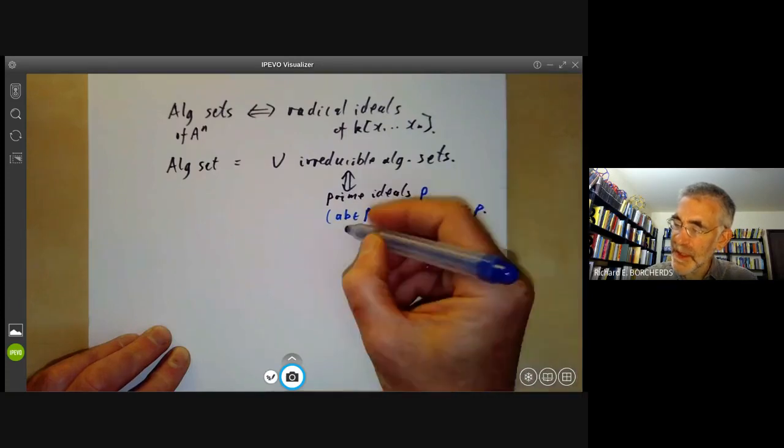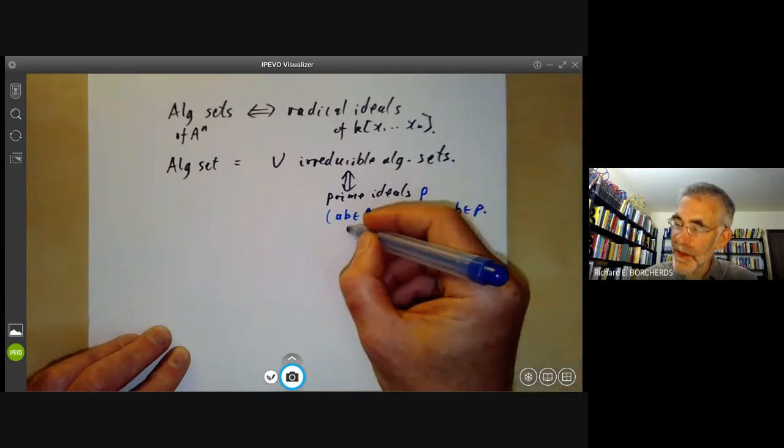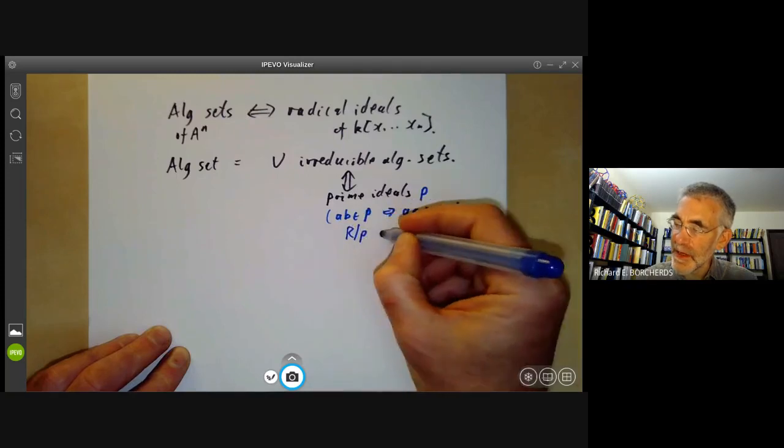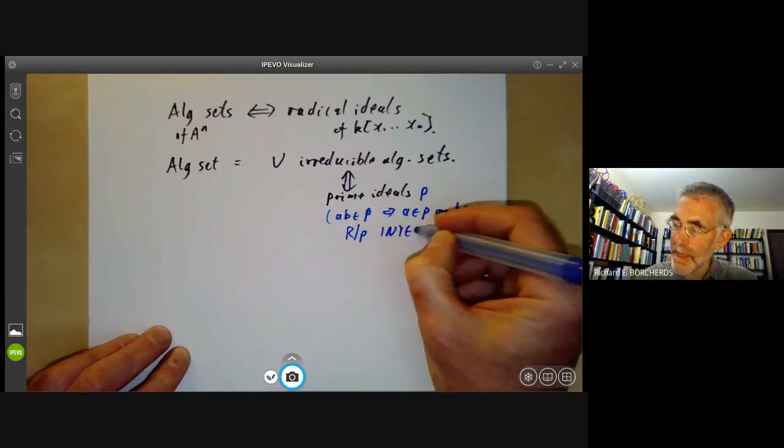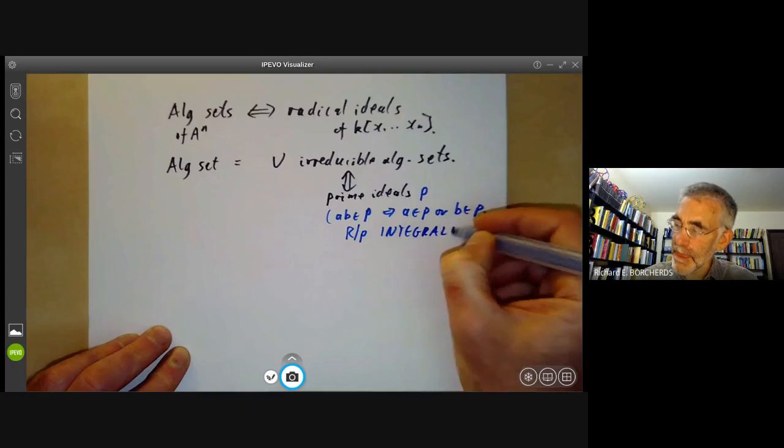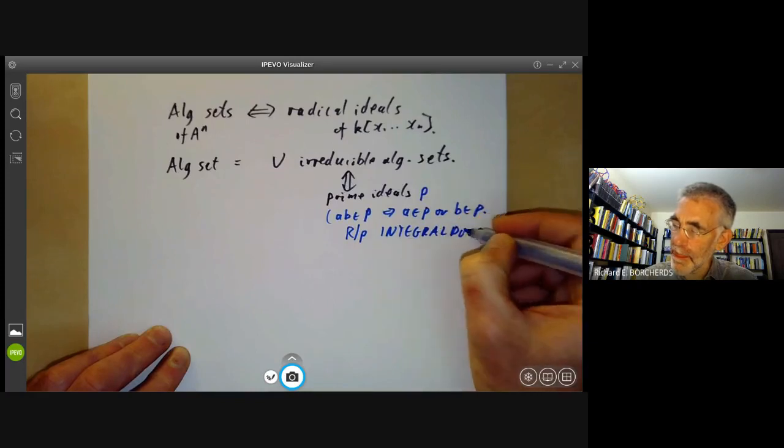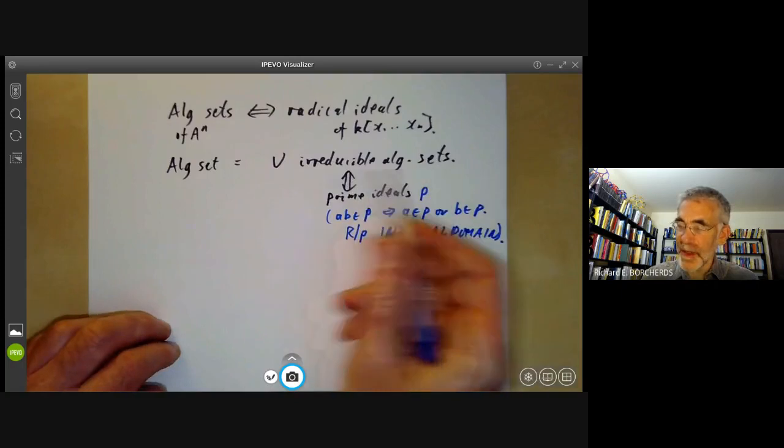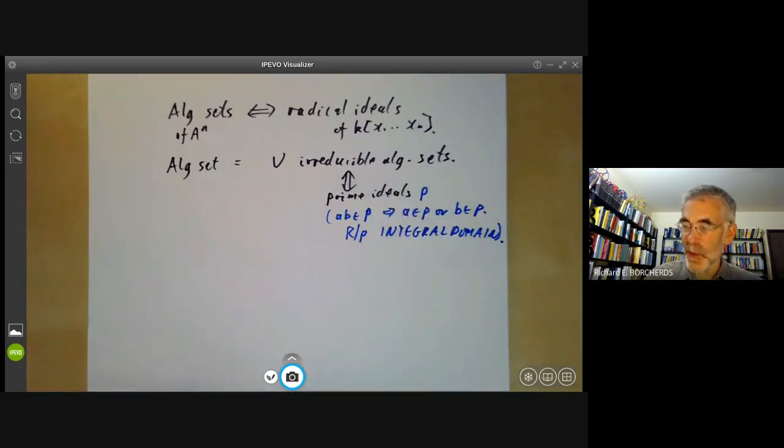Another way of putting this is that p is a prime ideal of a ring R if R/p is an integral domain. So it's easy to check that an irreducible algebraic set is one whose corresponding ideal is prime.